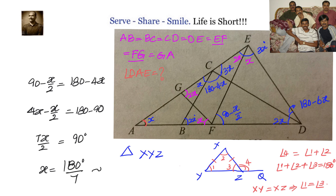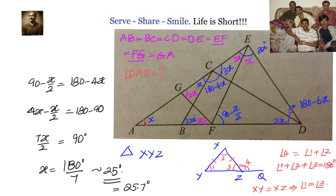Solving, X equals 180 over 7, which is approximately 25.7 degrees. So angle DAE is approximately 25.7 degrees. The three concepts used were: all angles in a triangle add up to 180 degrees; the exterior angle equals the sum of two opposite interior angles; and if two sides of a triangle are equal, their opposite angles are equal.